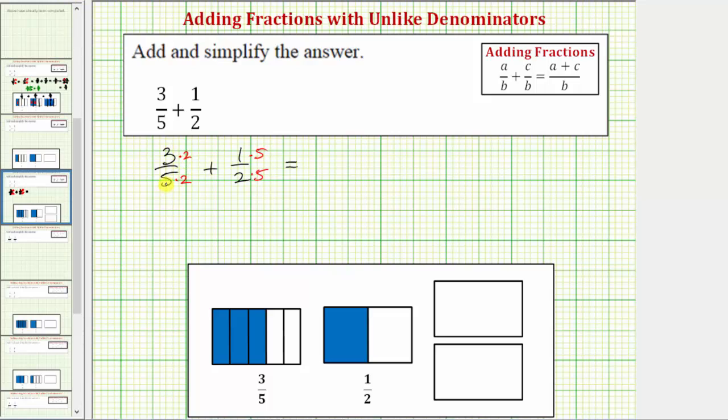So now we know that three fifths is equivalent to six tenths and one half is equivalent to five tenths.